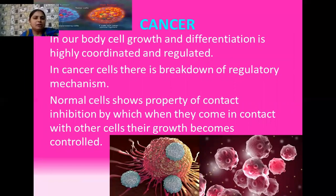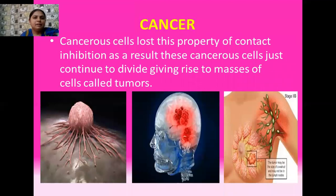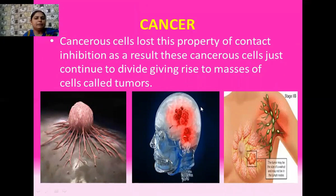These cancerous cells lose the property of contact inhibition, and as a result they keep on dividing again and again, forming masses of cells known as tumors. I have shown pictures of tumors — a tumor located in the shoulder of a person, sometimes tumors are also found in the brain, and sometimes tumors are present in the breast of women. Women generally suffer from breast cancer, and many of these women die because of breast cancer.